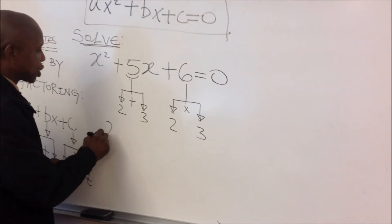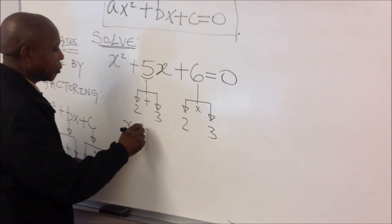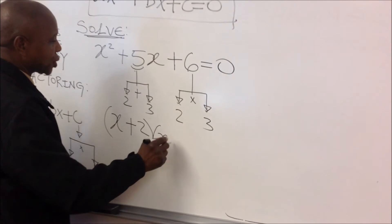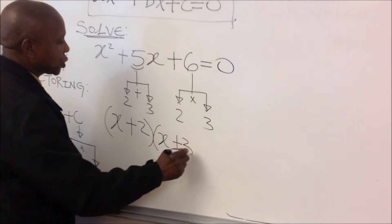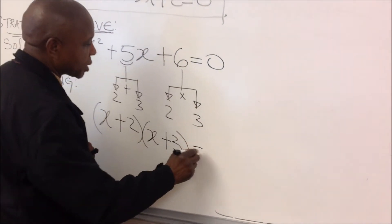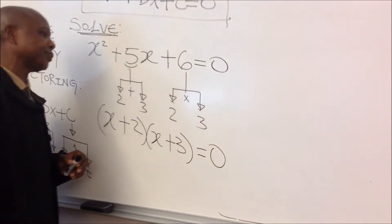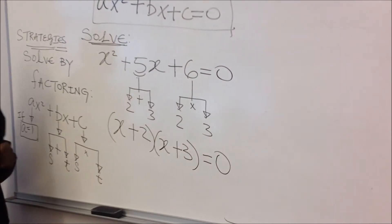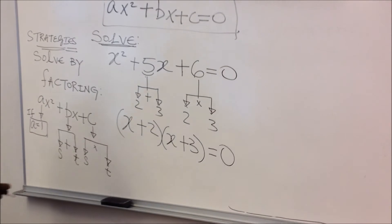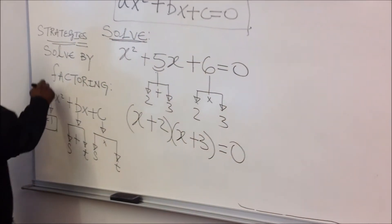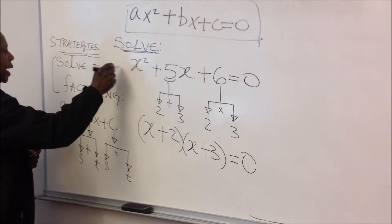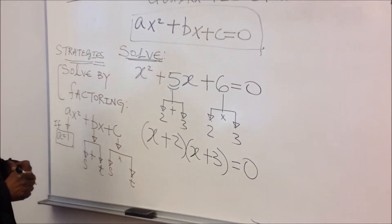So we're going to write x plus 2 times x plus 3 on the left side of the equation, and then equals 0. Notice we are solving the quadratic equation using the factoring method.